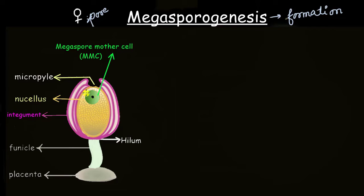Now let's focus on the cells surrounding the MMC. The other cells of the nucellus provide nourishment to the MMC as it grows in size, supplying cytoplasmic content. This MMC will then undergo a special kind of cell division called meiosis, or reduction division, in which the chromosome number of the MMC is reduced to half in each resulting cell.